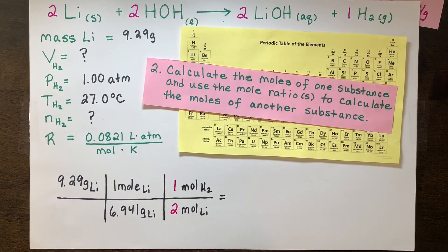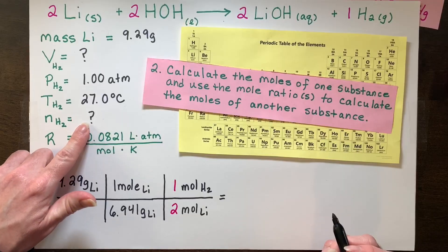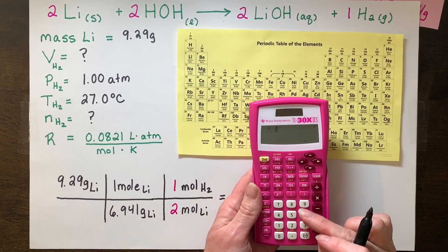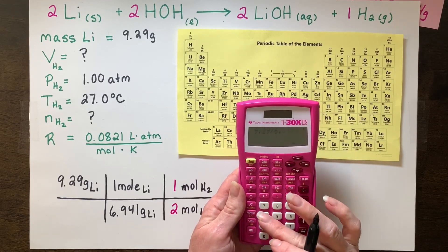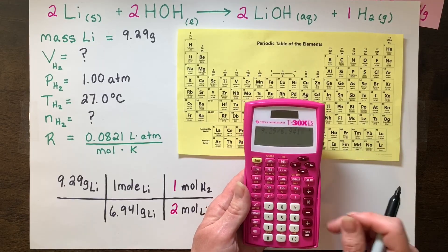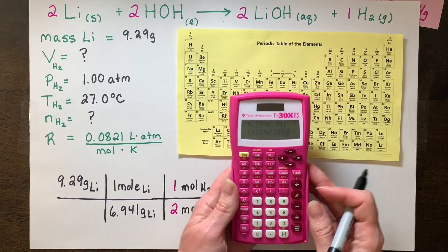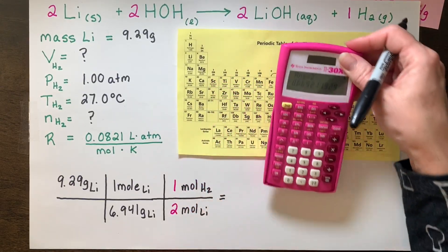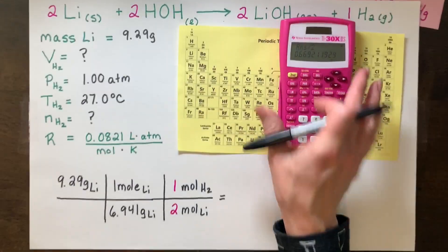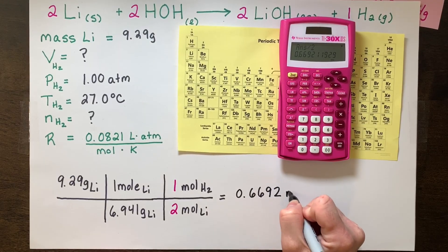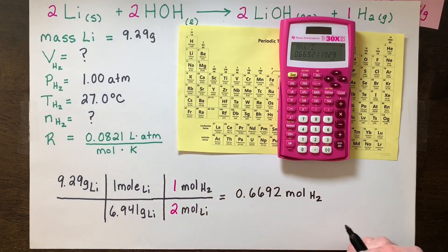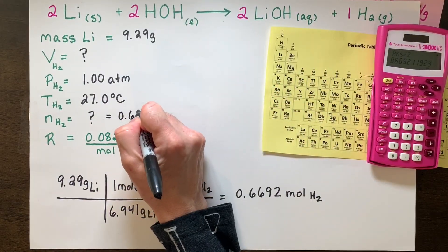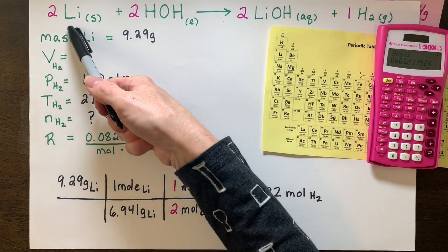At this point, we've solved for one of the missing variables we need for PV equals NRT. Grab your calculator. So 9.29 divided by 6.941 — and then I'm going to multiply by 1 and divide by 2. So there's my mole amount, which was 0.6692. I'm going to keep one extra sig fig, so 0.6692 moles. I really should only keep 3, but I'm going to keep an extra one to carry it through the calculations. So this isn't a question mark anymore — it is 0.6692 moles of hydrogen that we will be able to create by using up all that lithium.